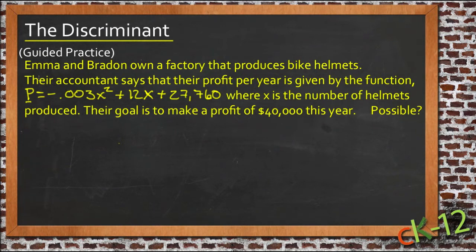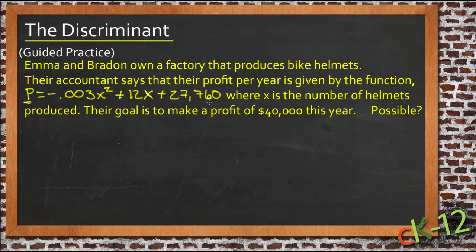The question says that Emma and Braden own a factory that produces bike helmets, and their accountant says that their profit per year is given by a function: p equals negative 0.003x squared plus 12x plus 27,760, where x is the number of helmets produced. Their goal is to make a profit of $40,000 this year — and the question is, is that possible?